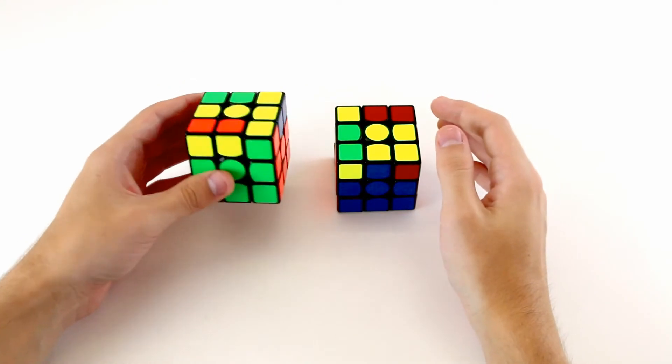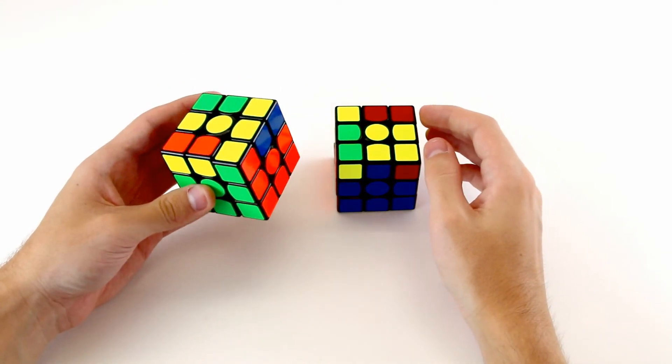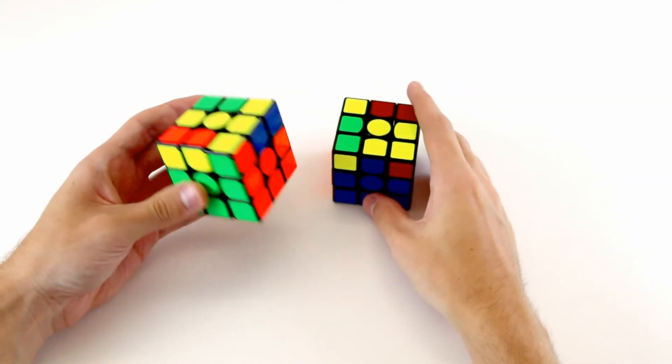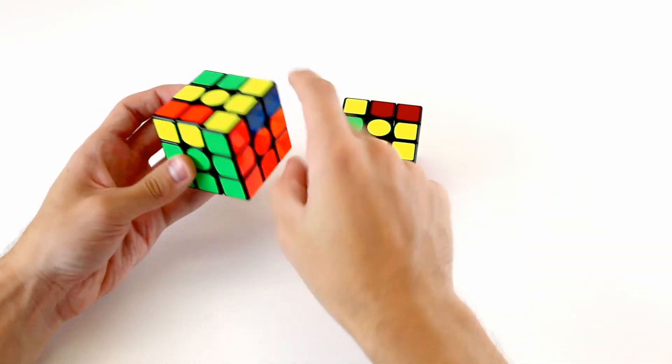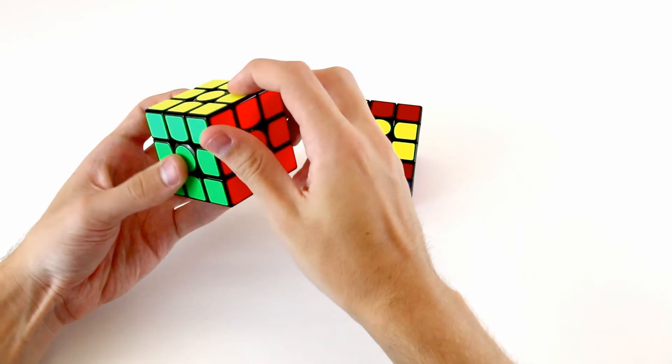You will find that some algorithms tend to preserve way more blocks than other cases where it can seem pretty random. So the 8-move T OLL algorithm preserves this block, this one, and this one, as I showed you before.